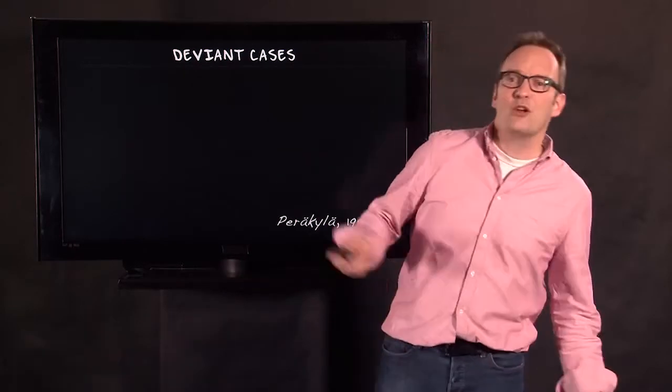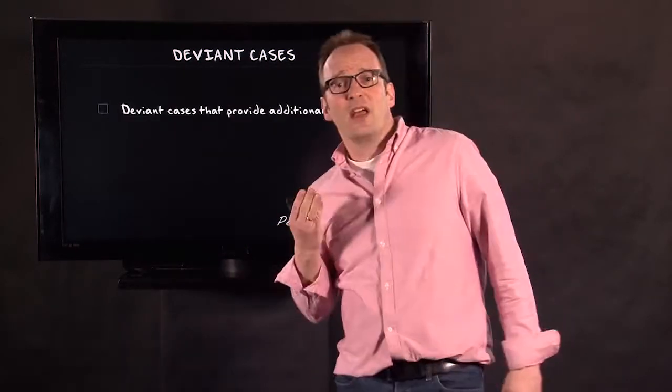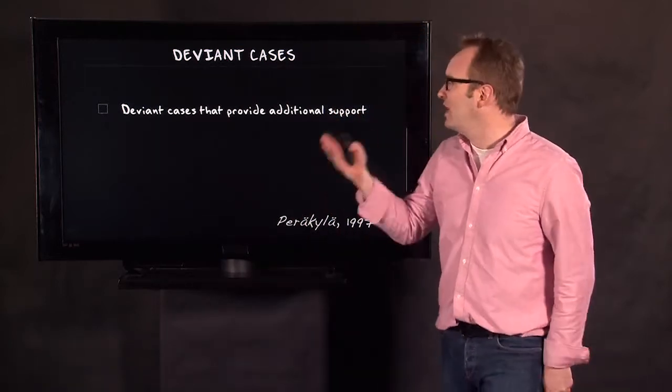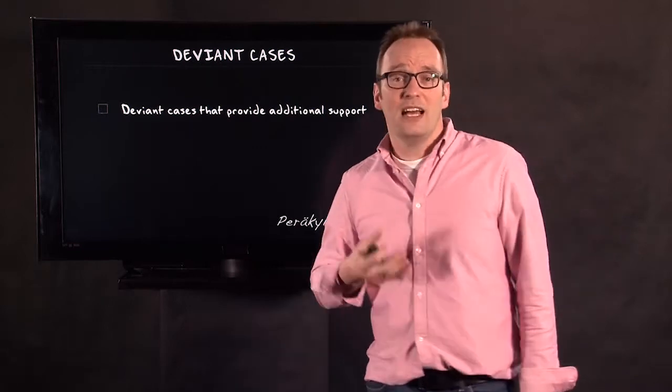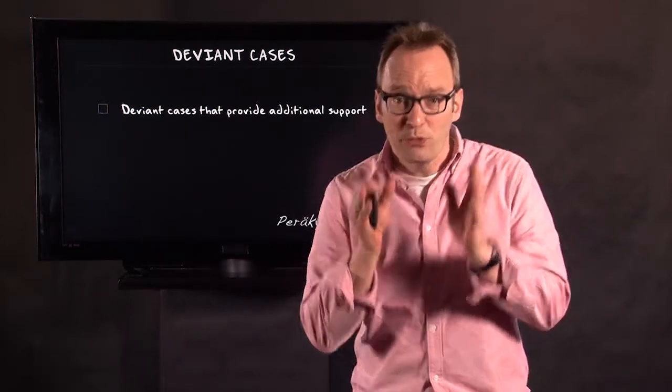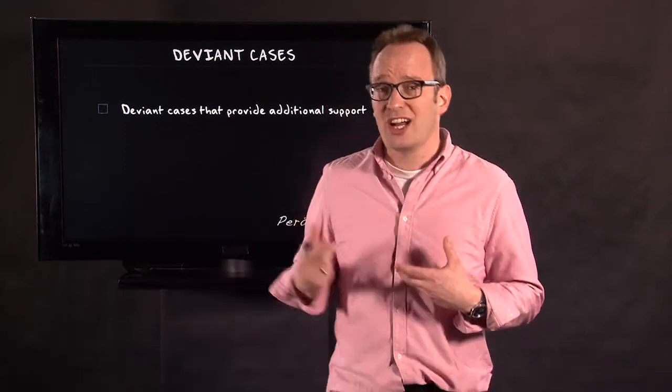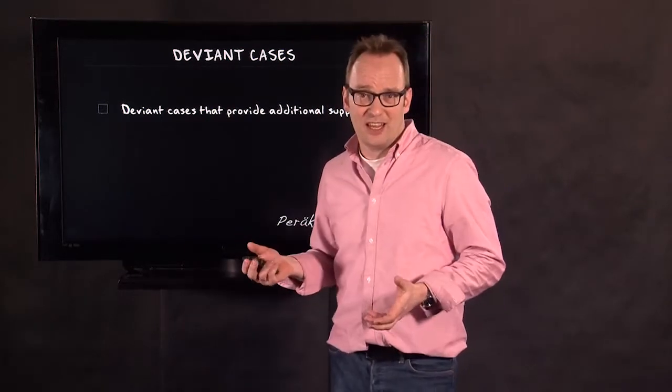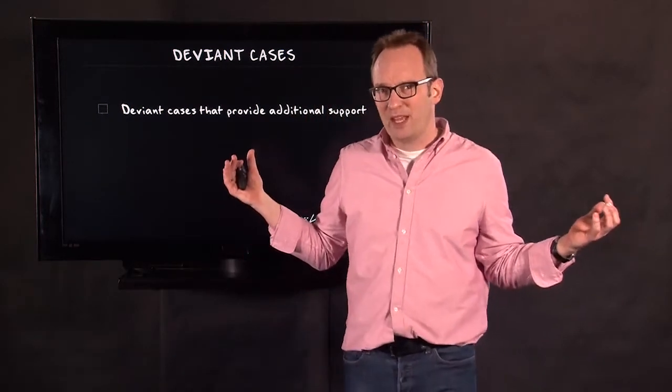So we look for deviant cases. And according to Peräkylä, we are looking at three different types of deviant cases. The first is deviant cases that provide additional support. For instance, we've been observing outside, just like Lyn Lofland did, how people privatize public space. They create a bubble around them.